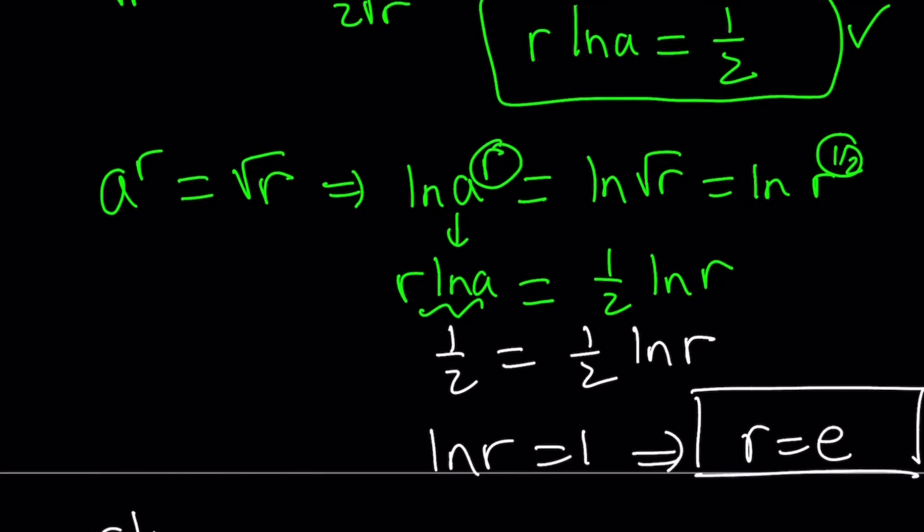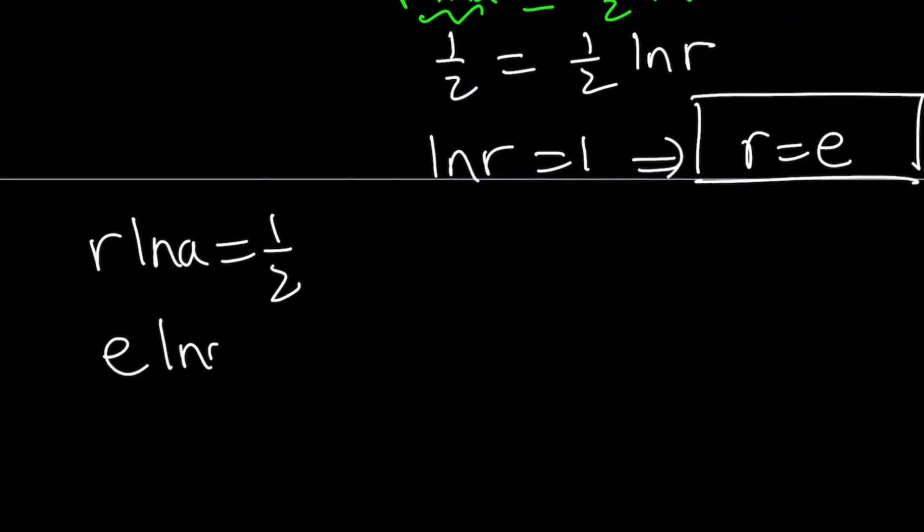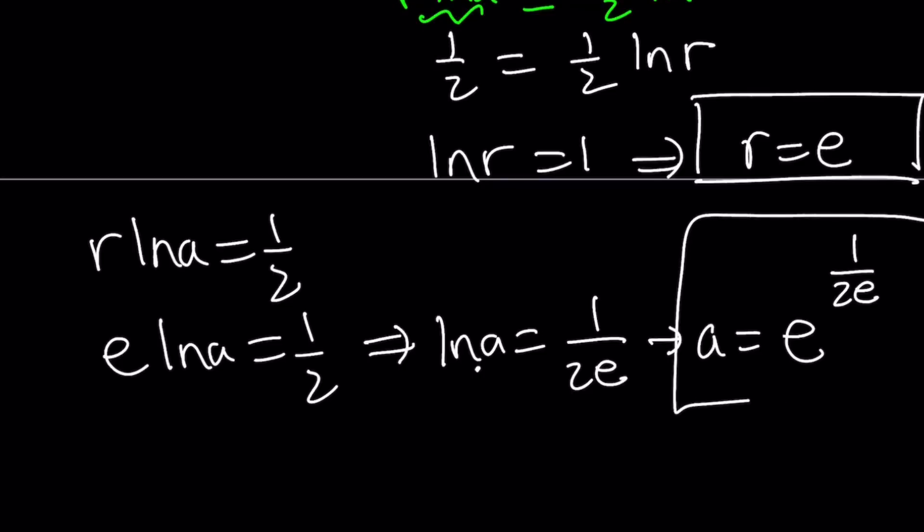r ln a is equal to 1 half. But r is e, Euler's number, so we have e ln a is 1 half. Then from here, ln a becomes 1 over 2e. But this is base e, so a becomes, by using definition of logs, a becomes e to the power 1 over 2e. Don't worry about the value of that number. I'm going to show you a graph, and then you'll get the idea. But that is the a value that we've been looking for.